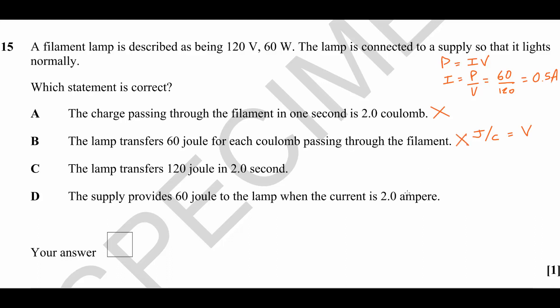Statement C: The lamp transfers 120 joules in two seconds. So power is equal to energy transfer or work done divided by time. Here we have a work done of 120 joules divided by two seconds, gives us a power of 60 watts, which is correct. So C will be our answer.